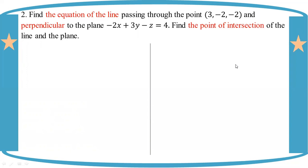Find the point of intersection of the line and the plane. The plane is -2x + 3y - z = 4, passing through (3, -2, -2). The directed value of the line perpendicular to the plane is (a, b, c) = (-2, 3, -1).